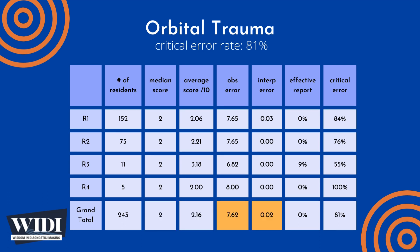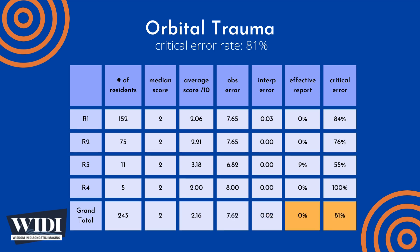Overall, the average number of points lost out of 10 due to observational discipline was 7.62. At the same time, only 0.02 points were lost due to interpretive errors on the part of the residents.